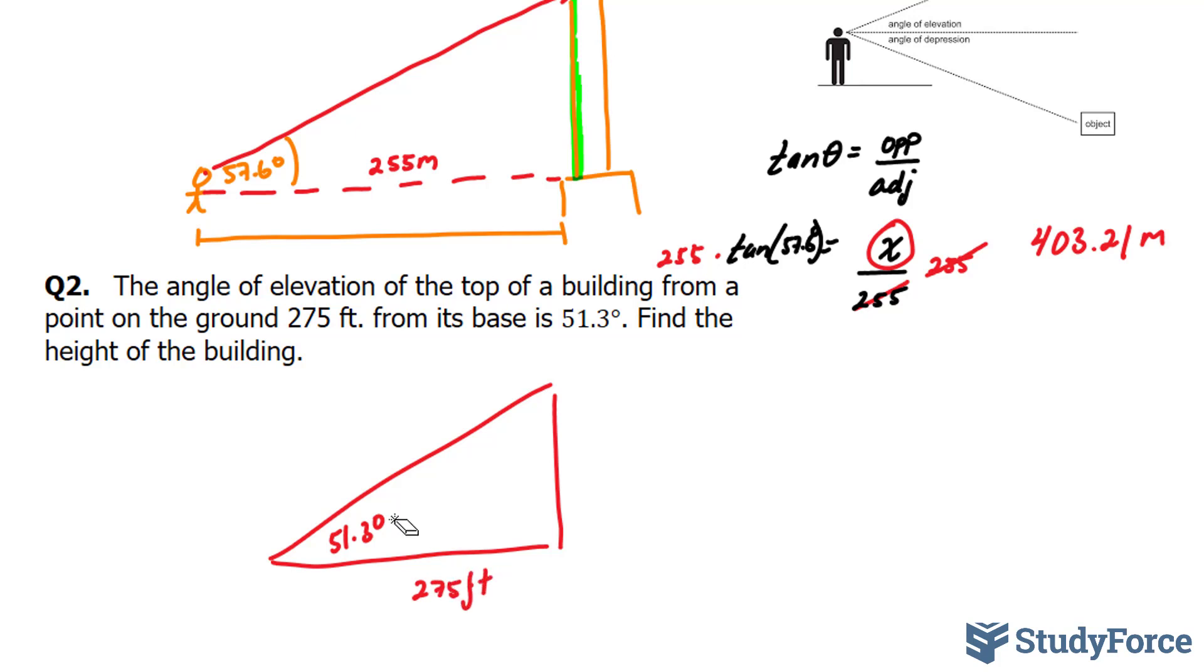But to make this question a little more difficult for us, let's pretend that we are looking for this. And instead, the building is 275 feet. Let's see how that would change the outcome. So this time we have the opposite and we want to look for the adjacent. We're still going to use tangent.